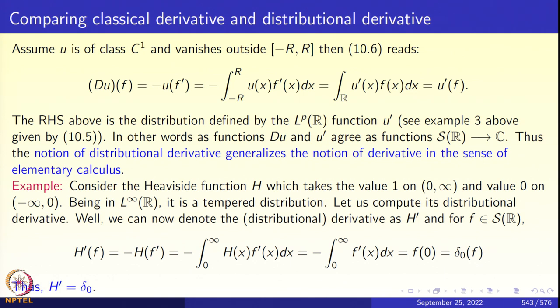The theorem tells us that the notion of distributional derivative generalizes and encompasses the earlier classical notion of derivative in elementary calculus. Equipped with this, we can differentiate non-differentiable functions. Let us apply this to the simplest non-differentiable function we know: the Heaviside function. The Heaviside function h(x) takes the value 1 on (0, ∞) and 0 on (−∞, 0). Since it is bounded — it is in L-infinity — it defines a tempered distribution H. Let us calculate the distributional derivative.